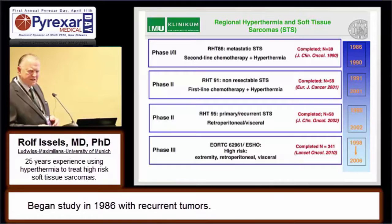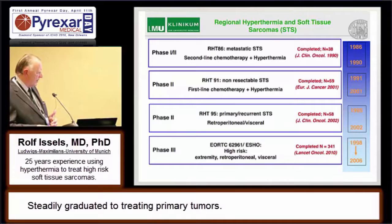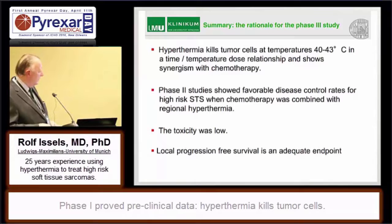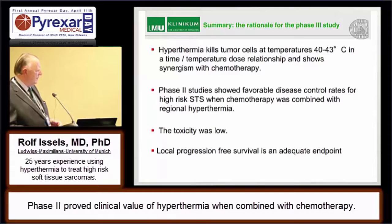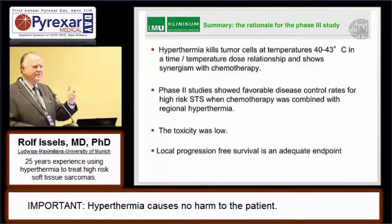Each step was published — we started the trial in 1986, and the first publication on second-line chemotherapy with hyperthermia was in 1990. What we learned from all these stepwise trials was that we eventually had primary tumors. This is the phase 3 trial in Lancet Oncology, 341 patients. The summary: hyperthermia kills tumor cells at temperatures of 40 to 43 degrees, phase 2 studies showed favorable disease control rates for high-risk soft tissue sarcoma, chemotherapy was combined simultaneously with hyperthermia, and toxicity was low. This is the most important point — the patient has no harm, and you can deliver heat in this context for this heavily treated patient without any harm.